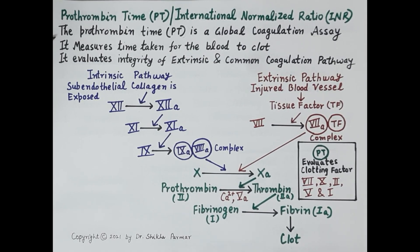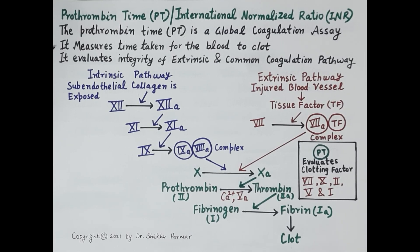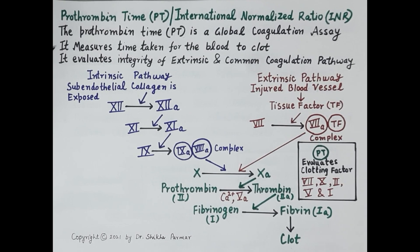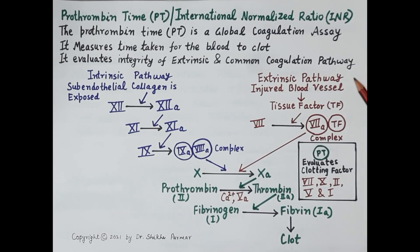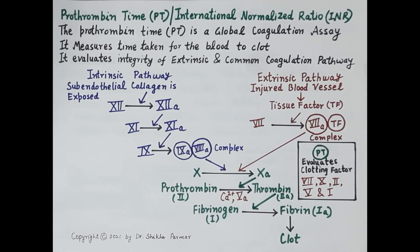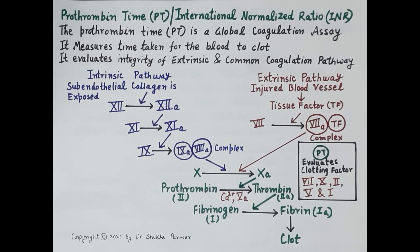Prothrombin time measures the time taken for the blood to clot. Importantly, prothrombin time is the time taken by the blood to clot when clotting is initiated by the activation of the extrinsic pathway of coagulation. As we know, there are two pathways by which coagulation is initiated: one is the intrinsic pathway and the other is the extrinsic pathway.